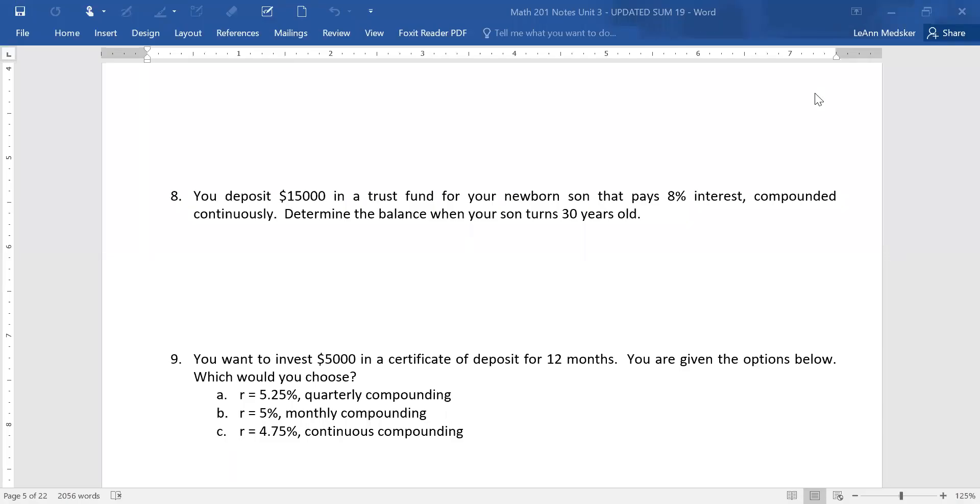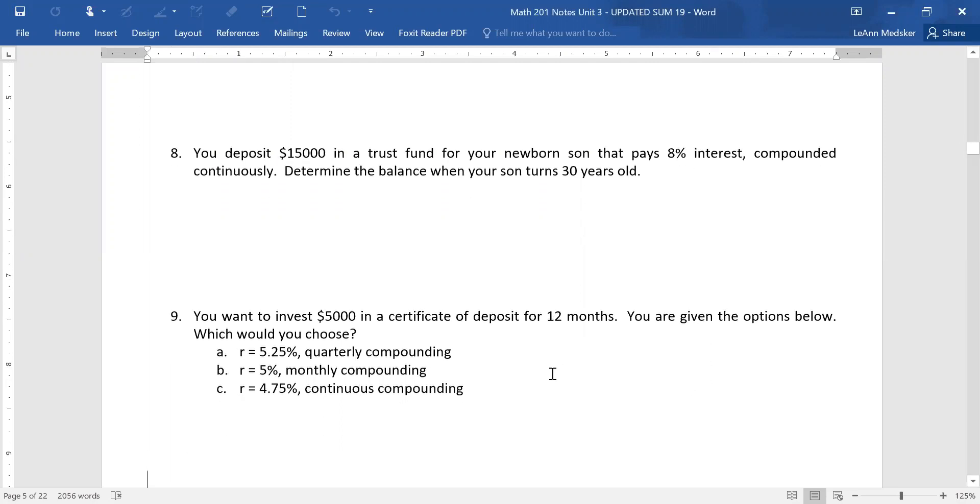All right. This is the extra examples from sections 4.1 through 4.3. We're looking at problem number nine. It says you want to invest $5,000 in a certificate of deposit or a CD for 12 months. You're given the options below. Which one would you choose?